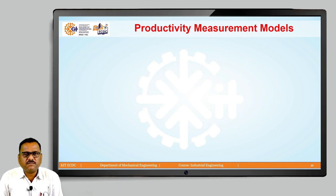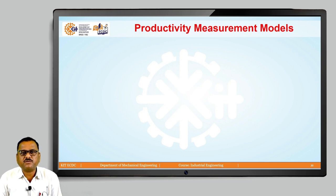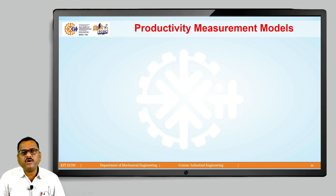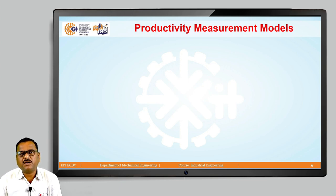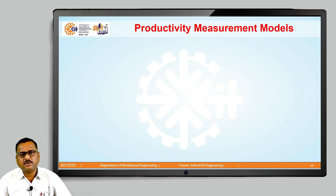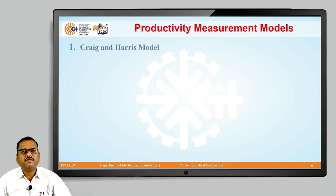Once we know the different types of productivity, we also need to understand the different advantages and disadvantages associated with those particular types of productivities. Now we are moving towards productivity measurement — how productivity is going to be measured. To measure different productivities, we require certain models. The first model is called the Craig and Harris model.